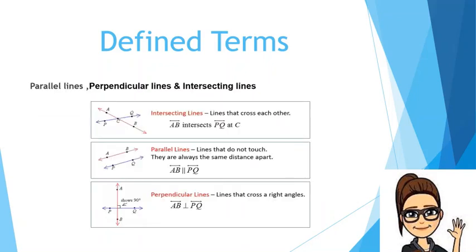Now let's look at parallel lines, perpendicular lines, and intersecting lines. Starting with intersecting lines — these are coplanar lines that cross each other. Looking at the figure, the red line AB intersects the blue line PQ at point C.